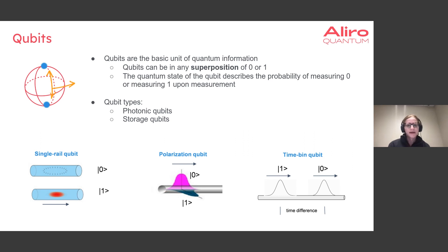There are polarization qubits which are described by the polarization of the photon, and there are also time bin qubits where the state of the qubit is described by the time delay during which the photon is emitted.